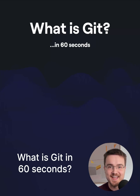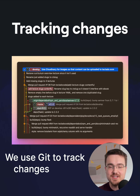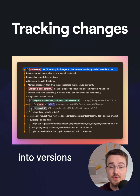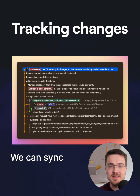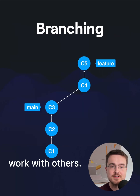What is Git in 60 seconds? We use Git to track changes to our code and save groups of changes into versions called commits. We can sync our commits with online services like GitHub to work with others.